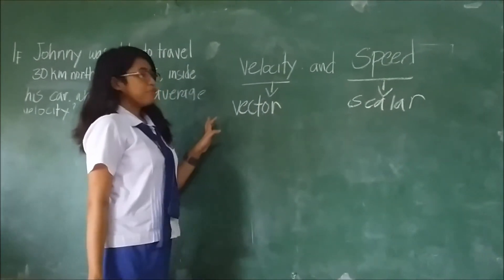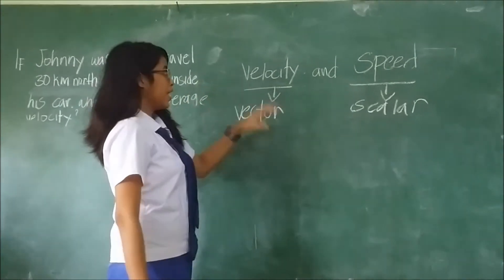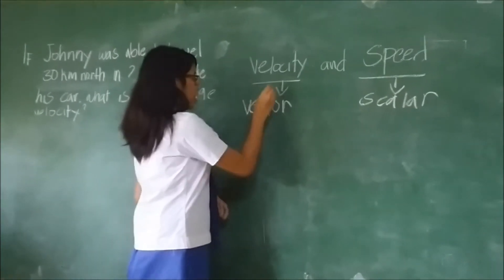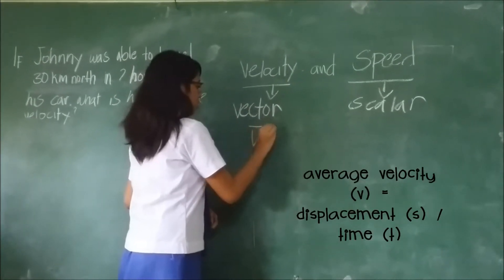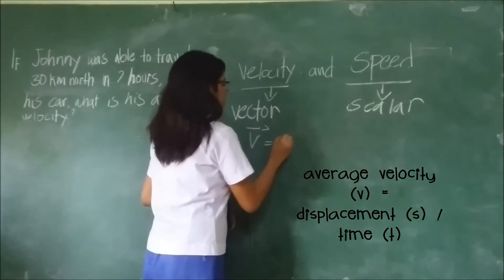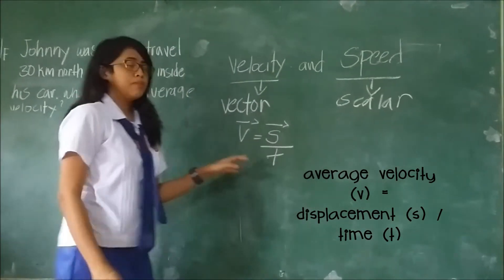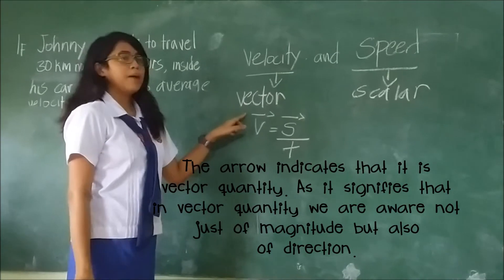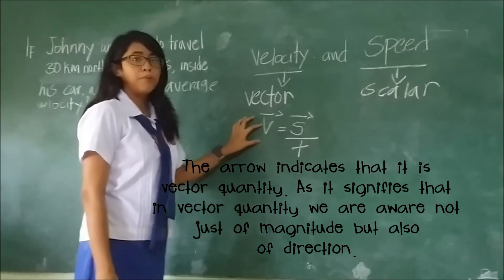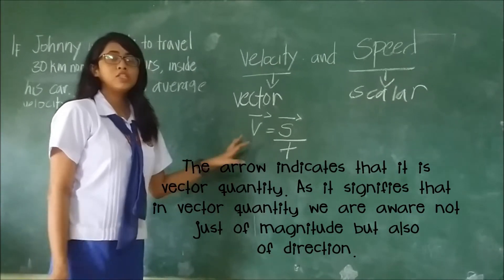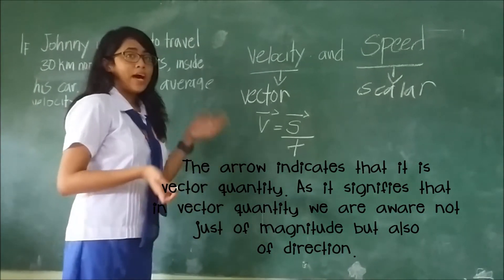In order to find the average speed and velocity, we must know its formula. For velocity, we have V is equals to S or displacement over T or over time. The arrow above here indicates that this variable is a vector quantity, so we are aware of both its magnitude and direction.